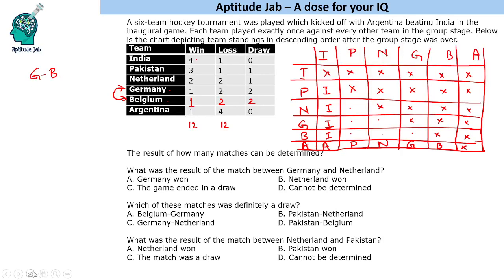Germany versus Belgium is confirmed as a draw. That accounts for one draw match each. We now need to find one more draw match. The second draw match for Germany cannot be against Belgium again, since each team plays every other team exactly once. So Germany's second draw must be against Pakistan or Netherland. Similarly, Belgium's second draw must be against one of those two teams.